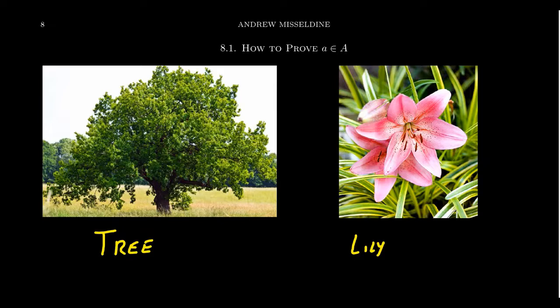We can identify whether a plant belongs to the category of trees or not. Using our language, we would say that the tree illustrated on the screen belongs to the set of trees. If we take all of the trees in the world, this plant on the left belongs to that set. Deciding that this is a tree is the same thing as proving it belongs to a set. In mathematics, we have to do the same thing — does this object belong to the set or not? It's all about classification.